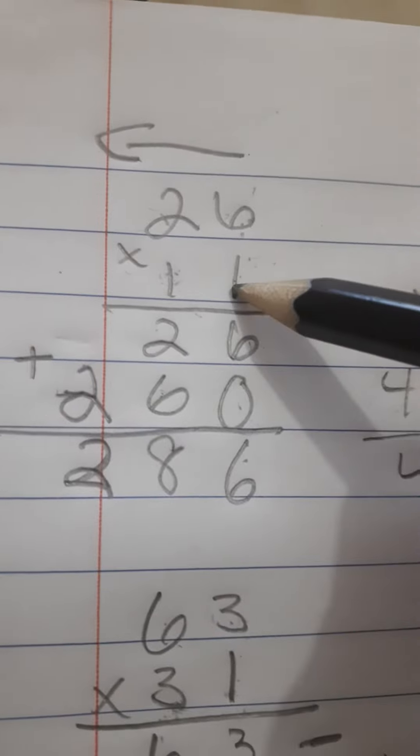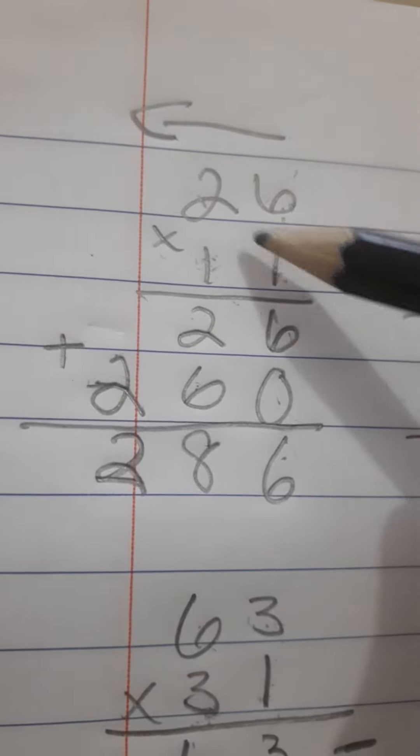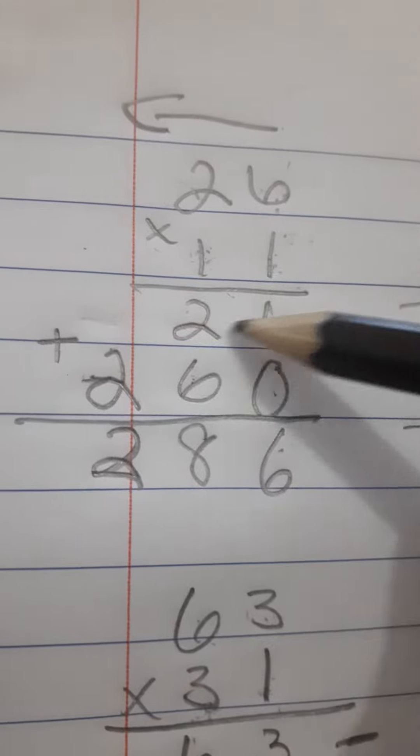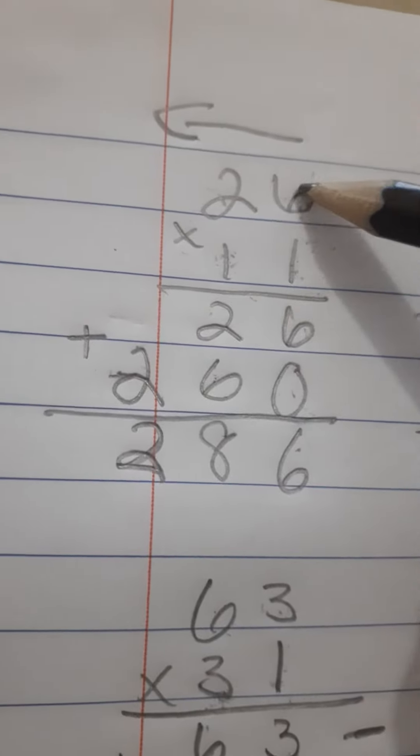We're multiplying this, and then we're multiplying this. That's how we got 2 and 26 down here. 1 times 6, 1 times 2.